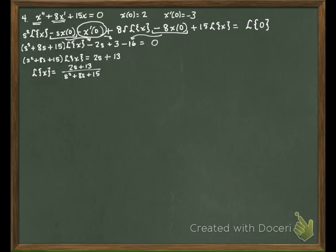Now we're back to partial fractions. We factor the denominator as s plus 5 times s plus 3, and set this equal to A over s plus 5 plus B over s plus 3. We multiply through by s plus 5 times s plus 3.